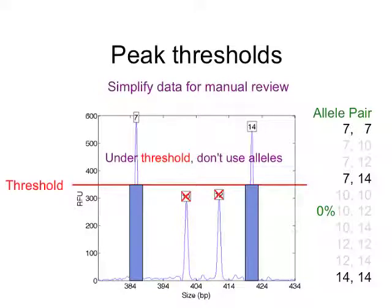The thresholds we've heard about are simplifications of the data that are good for people. Instead of trying to create hundreds or thousands of variables that model the data and all the uncertainty, the lab does some experiments and draws a line. Anything over the line is considered in — like the 7 and the 14 — and they're given equal weight. Anything under the line is cast out. And as you've heard, that's a problem: you might give zero probability to events that don't appear in the data, for example if the 7 and 14 correspond to a known individual and you're looking for something else.